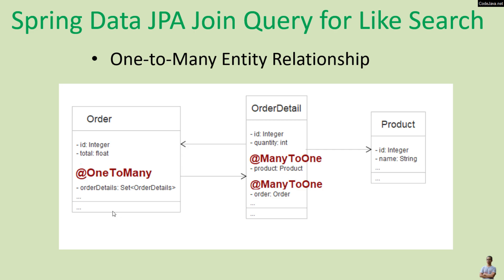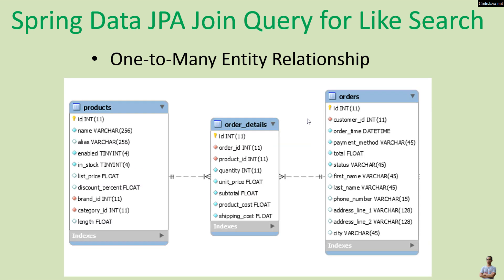Now let's see an example of Spring Data JPA join query for like search on a one-to-many entity relationship between order and order detail, and between product and order detail. An order consists of one or more order details, and an order detail belongs to only one order. A product can be in one or more order details, but an order detail is associated with only one product. In the database, the one-to-many relationship between orders and order details is represented by the foreign key order_ID in the order details table, and the relationship between products and order details is represented by the foreign key product_ID.